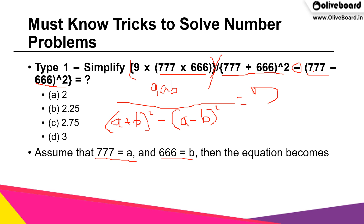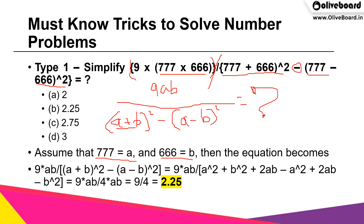We have to find the answer. How can we solve it? It's very simple. (a + b)² − (a − b)²: expand (a + b)² as a² + 2ab + b², then subtract (a − b)² which is a² − 2ab + b². When you open the bracket, everything cancels except for 4ab. So you have 9ab divided by 4ab. Cancel ab, and 9 divided by 4 is 2.25.